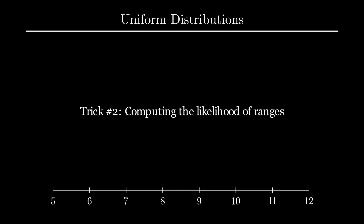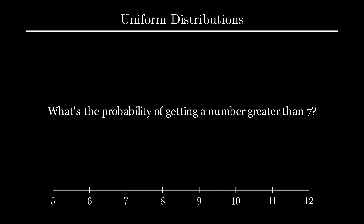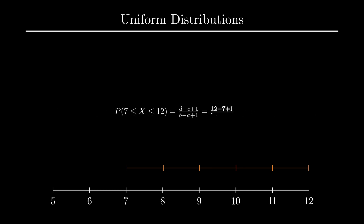Another useful trick is we can compute the probability of a certain range of values on the uniform distribution by taking the ratio of the discrete range to the total length of the distribution. In the 5 to 12 distribution example, we might be curious about the probability of drawing a number greater than 7. We could compute this by taking the ratio of the length of 7 to 12 to the length of 5 to 12, which gives 6 over 8. We can compute the probability of any range in the same way by computing (d − c + 1) / (b − a + 1).